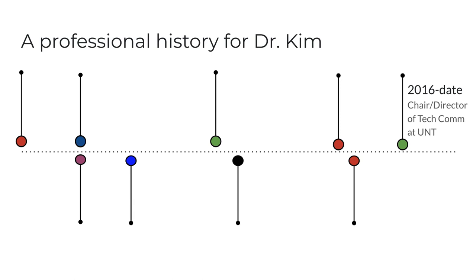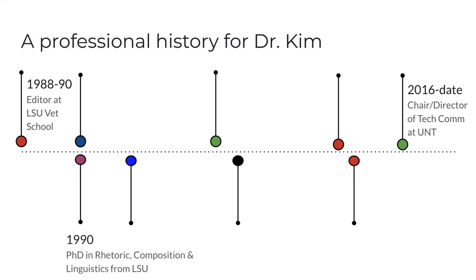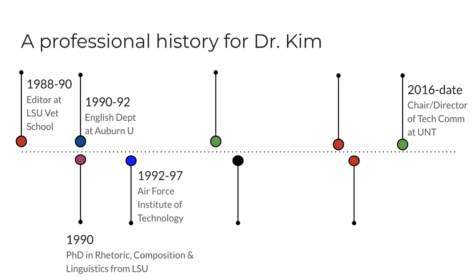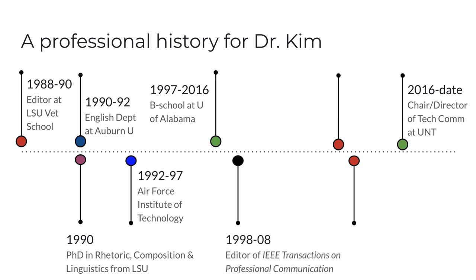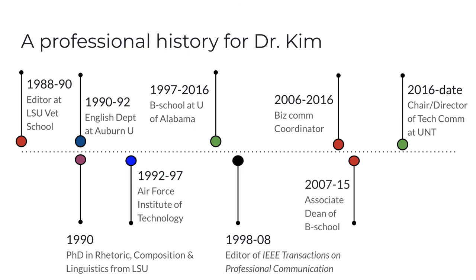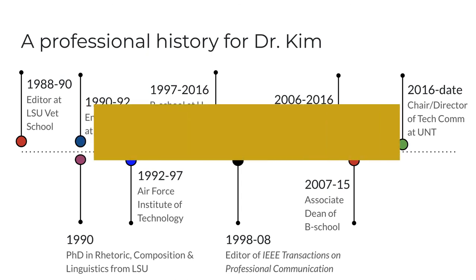Here's a brief professional history leading up to 2016. My passion for language eventually led me to graduate school to study linguistics and tech writing. In the late 1980s, I worked as a technical editor. I earned my PhD from LSU in 1990 after completing dissertation research on applications of linguistics to professional writing. My first professor job was in the English department at Auburn University. In 1992, I began work as a professor and researcher at the Air Force's postgraduate school. In 1997, I joined the business school at the University of Alabama, where I stayed for 19 years. During that time, I served as editor of an IEEE research journal for over 10 years and held some other administrative roles. So now you know about the goals of the course, the major assignments, the philosophy behind them, and a little about me. Let's get going.